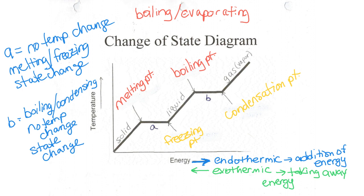Evaporation is when a liquid gets enough energy just from room temperature alone. If you leave a drop of water out, it's gone a few hours later — it evaporates. In drier air with less moisture, water diffuses from where it's sitting up into the air. This diagram is extremely important; we'll go over it again in class because there will be a quiz and test questions on it.